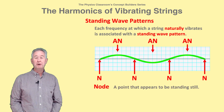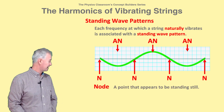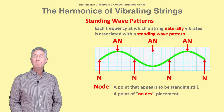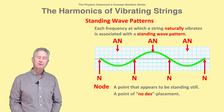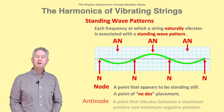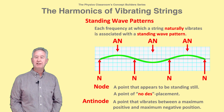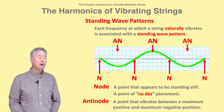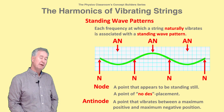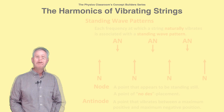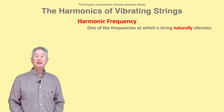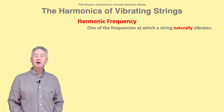A node is a point along the string that appears to be standing still — a point of zero displacement. An antinode is the opposite: it's a point along the medium that undergoes a maximum positive and maximum negative displacement. Each frequency at which a string naturally vibrates is known as a harmonic frequency.